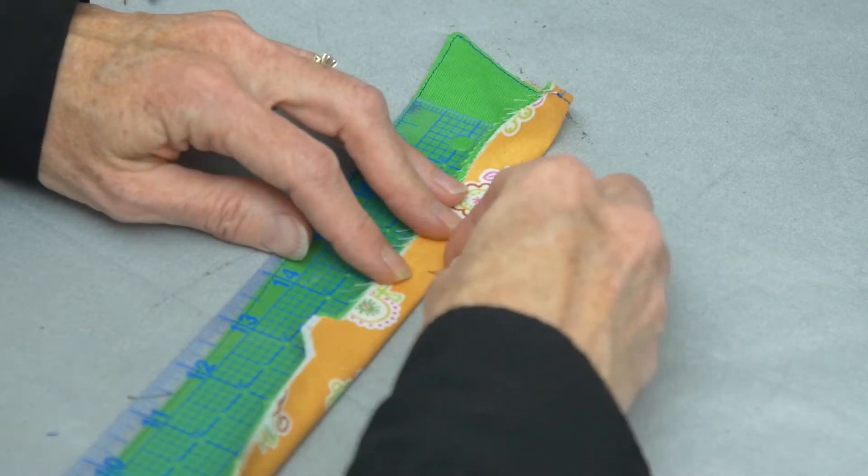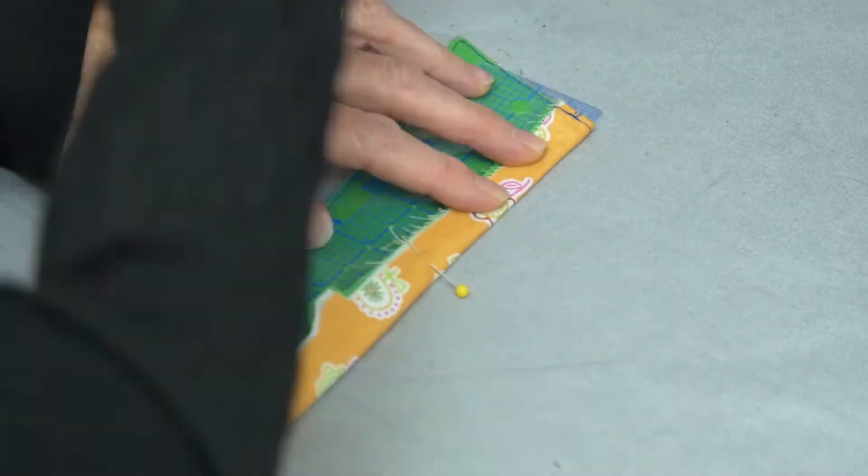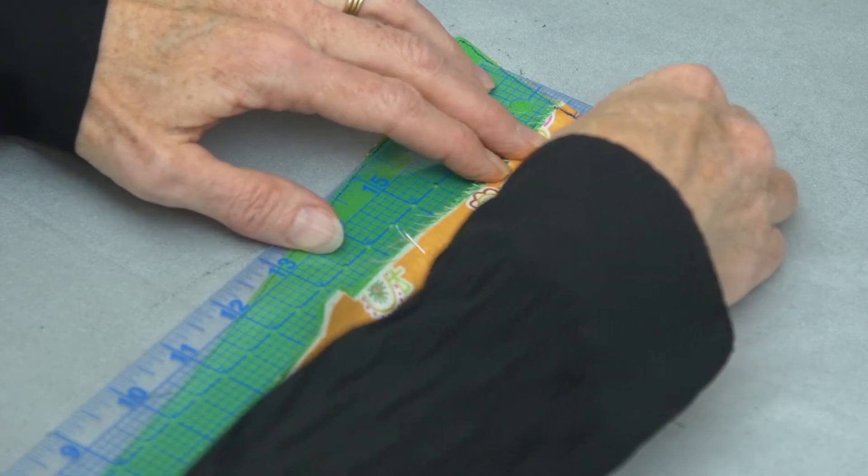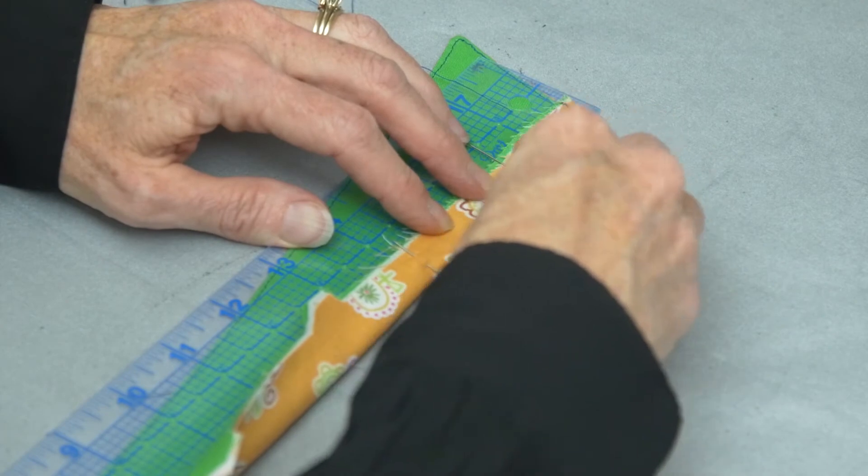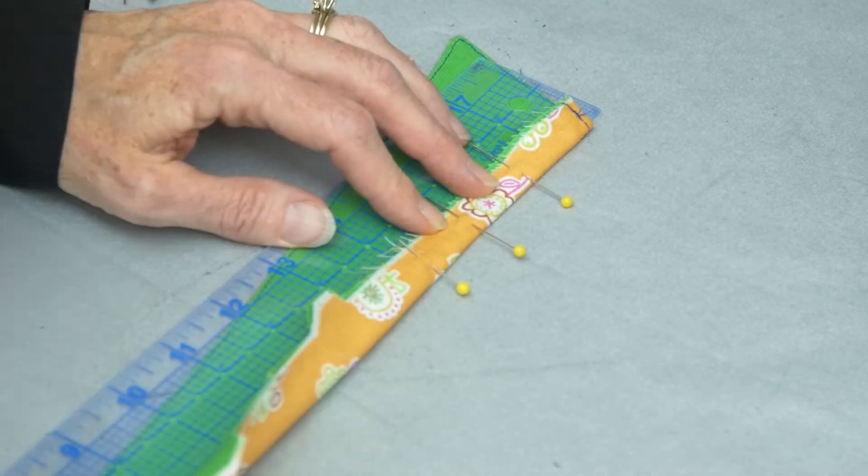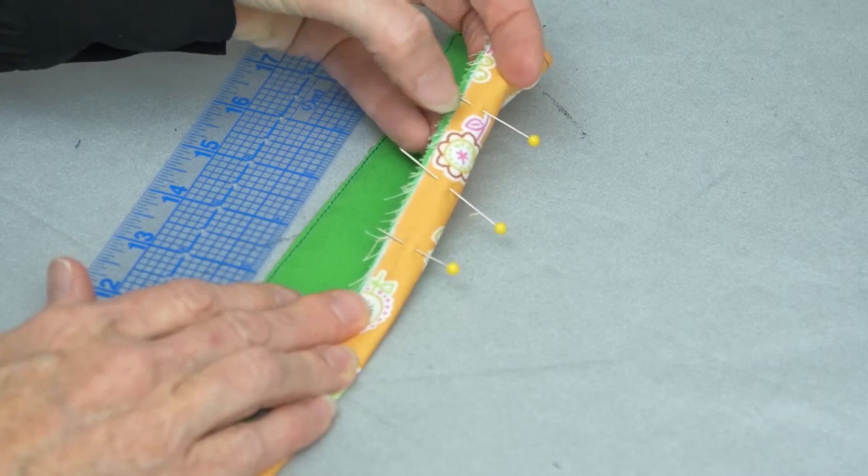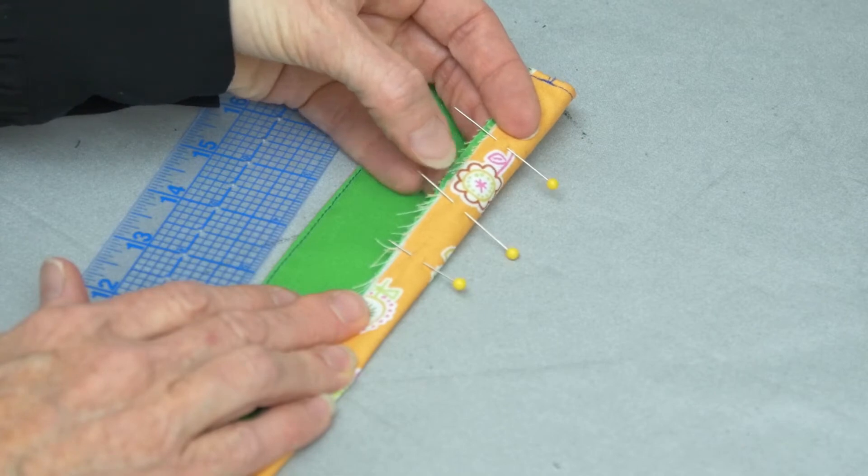Take that seam allowance of the fabric, fold it back over the ruler, and then pin it in place as it is folded. If you look at that, you can see it's beveled that edge. I'm getting the under collar coming out.